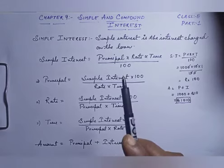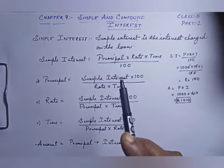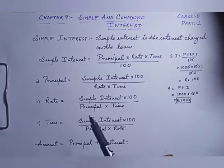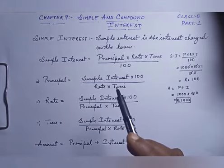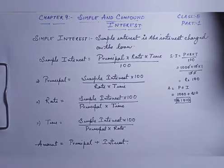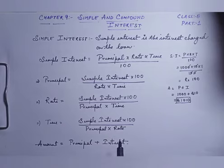After finding simple interest, if we have to find the amount to return, we use the formula: Amount = Principal + Interest.